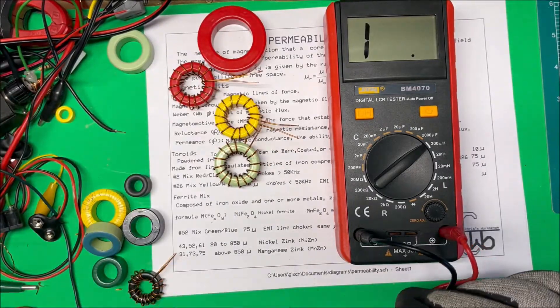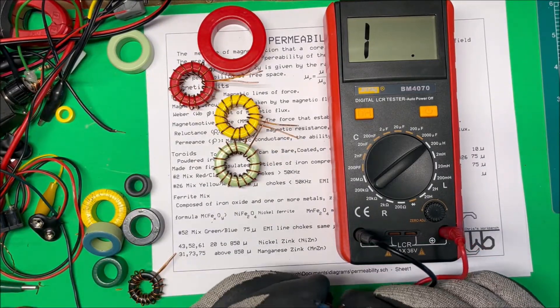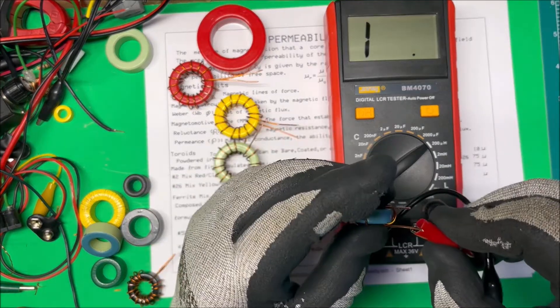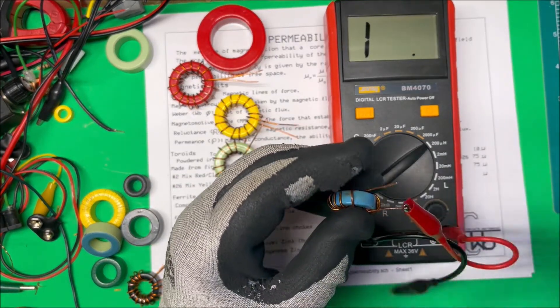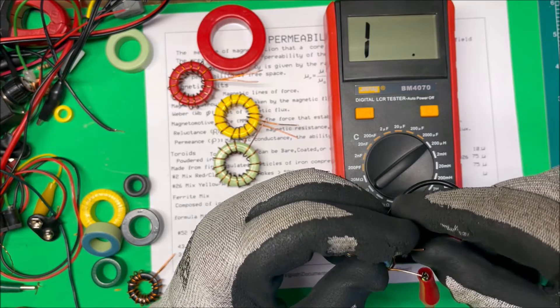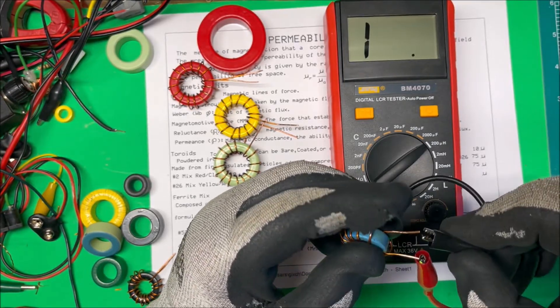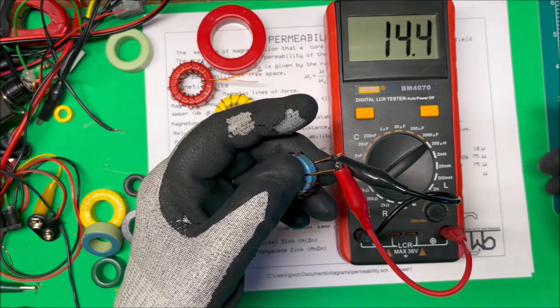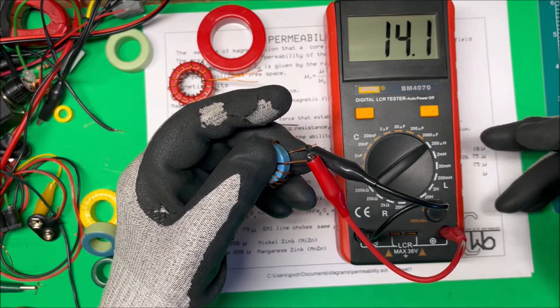These are 75 and this blue one here, I don't know what it is actually, but we're going to test it. It's got 14 microhenries.